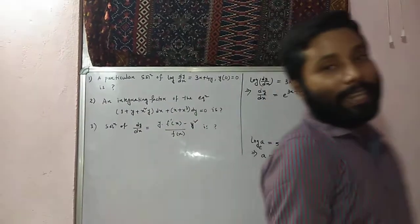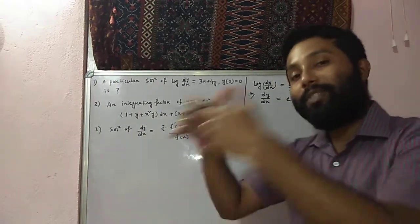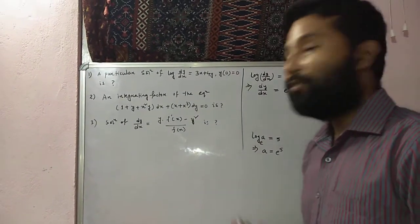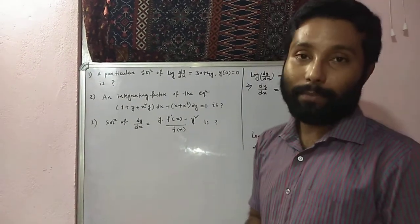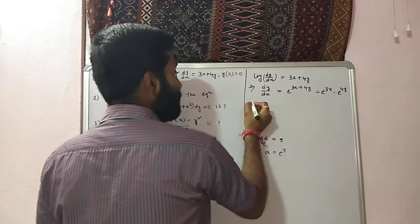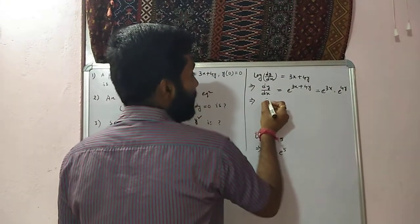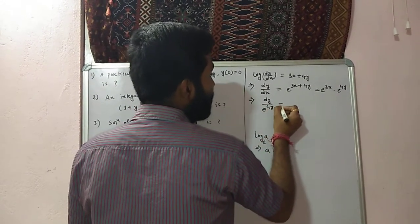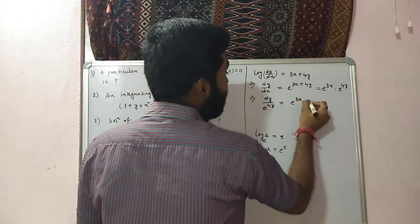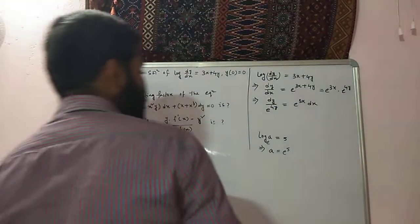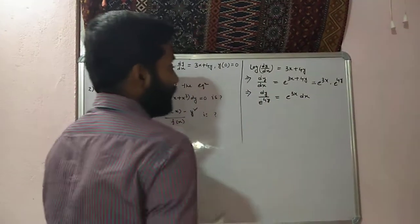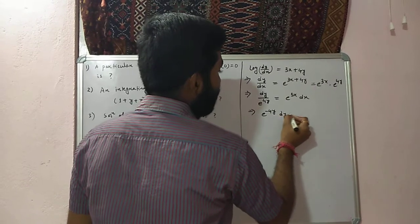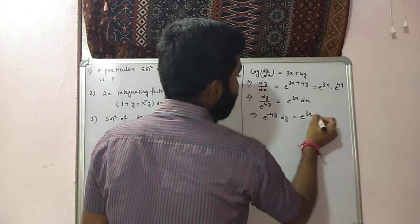After this, dy/dx equals e to the power 3x into e to the power 4y. Can we use the variable separable method here? Yes, here we can go for the variable separable method. That is, dy divided by e to the power 4y equals e to the power 3x into dx. Or, we can write it as e to the power minus 4y into dy equals e to the power 3x dx.